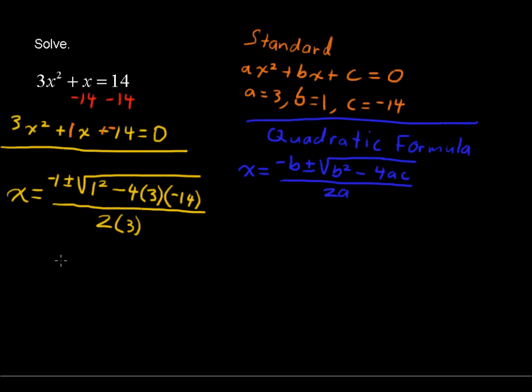Now we can start to simplify this. So x equals negative 1 plus or minus. It's very important that you put the plus or the minus. The square root of 1. Let's see, negative 4 times 3 times negative 14. Negative times a negative makes a positive, so we'll say plus, and the product of those three numbers is 168. All over 2 times 3 is 6.